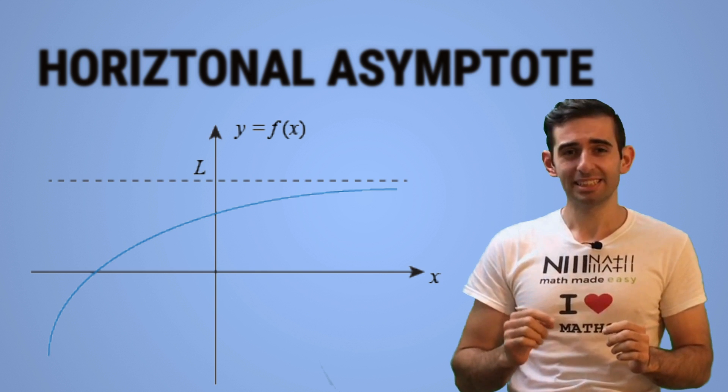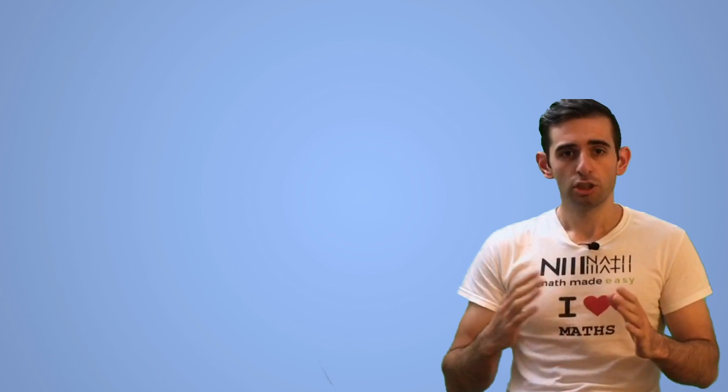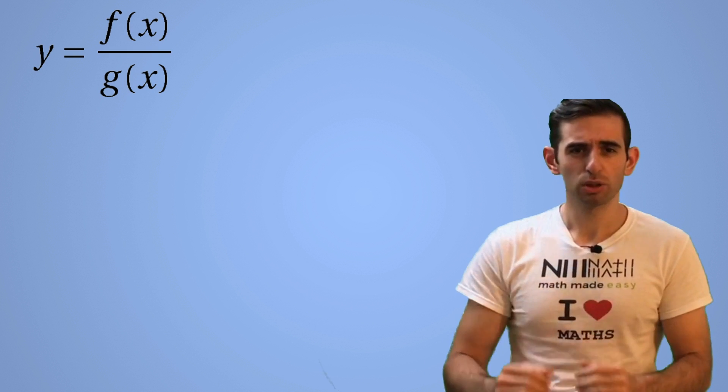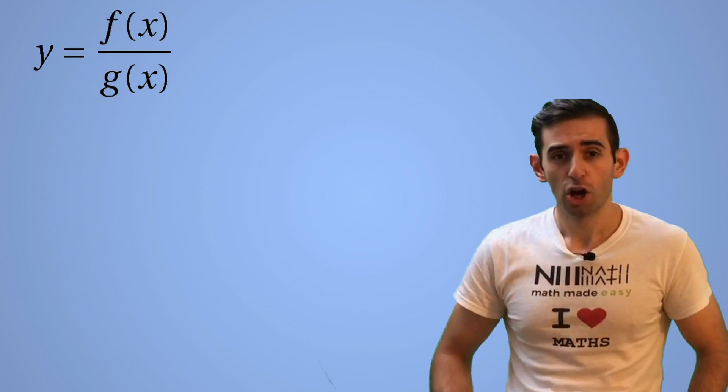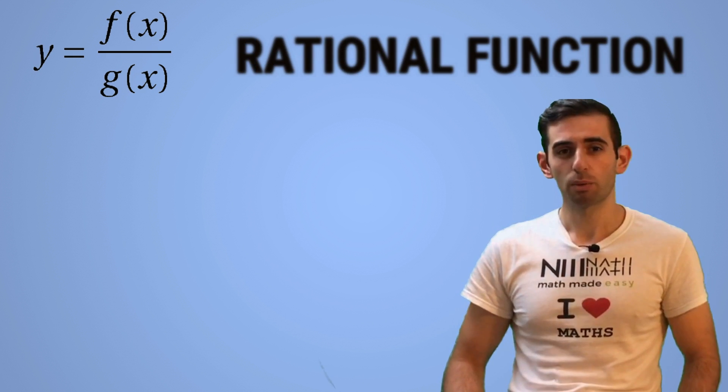So to do that, we need to consider three different cases. First off, all curves that have asymptotes pretty much look like y equals f of x over g of x, which is called a rational function.